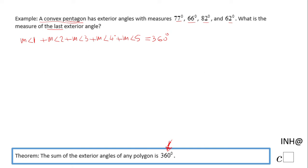This is the statement I start with. We have four of these angles, so measure of angle 1 is 77°, angle 2 is 66°, angle 3 is 82°, angle 4 is 62°, and we need to find the measure of angle 5.